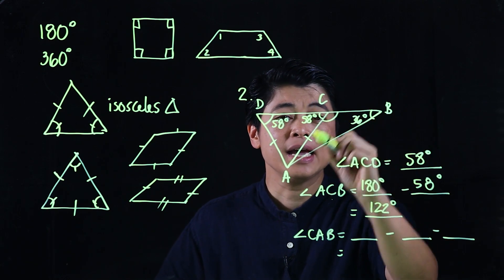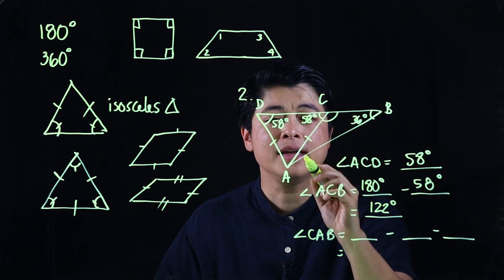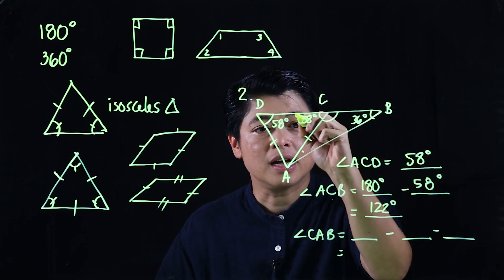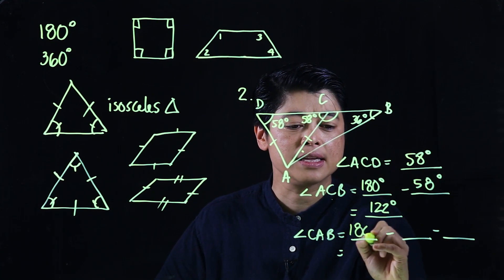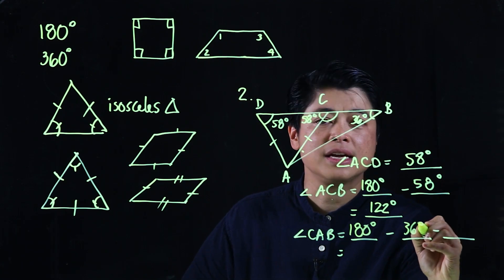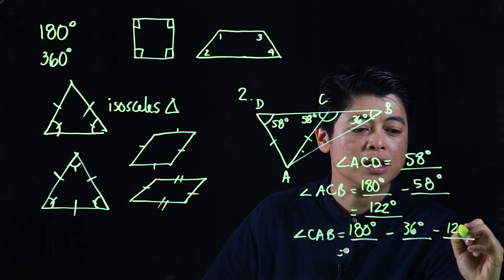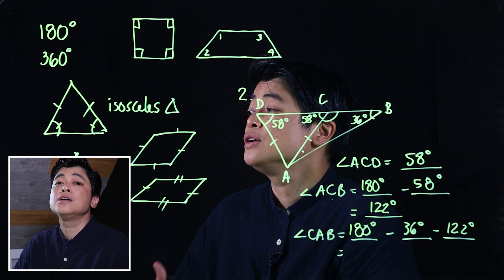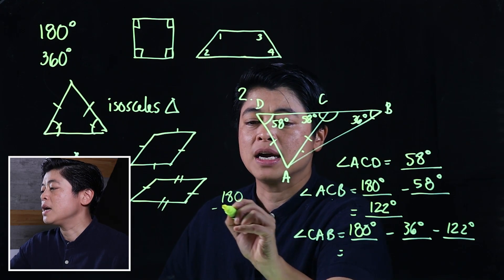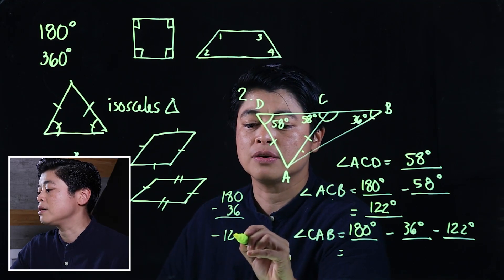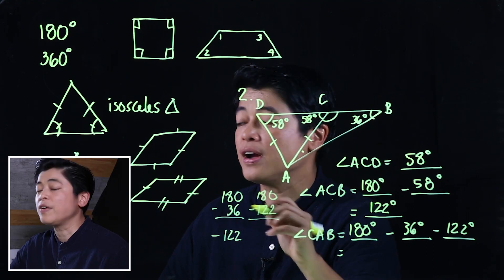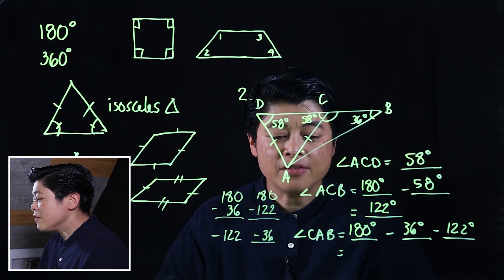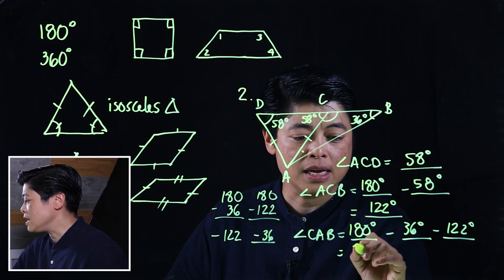For angle CAB, we're working inside a triangle and we already know two of the three angles. So that's 180 degrees minus 36 degrees minus 122 degrees. Students can work one step at a time — the answer should be 22 degrees. You can check with a calculator, but shouldn't rely on it.